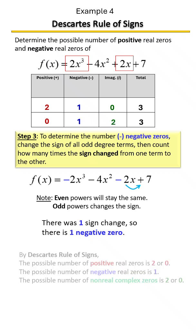We are done. So we can conclude that for positive zeros is two or zero, one negative zero, and two or zero non-real complex zeros.